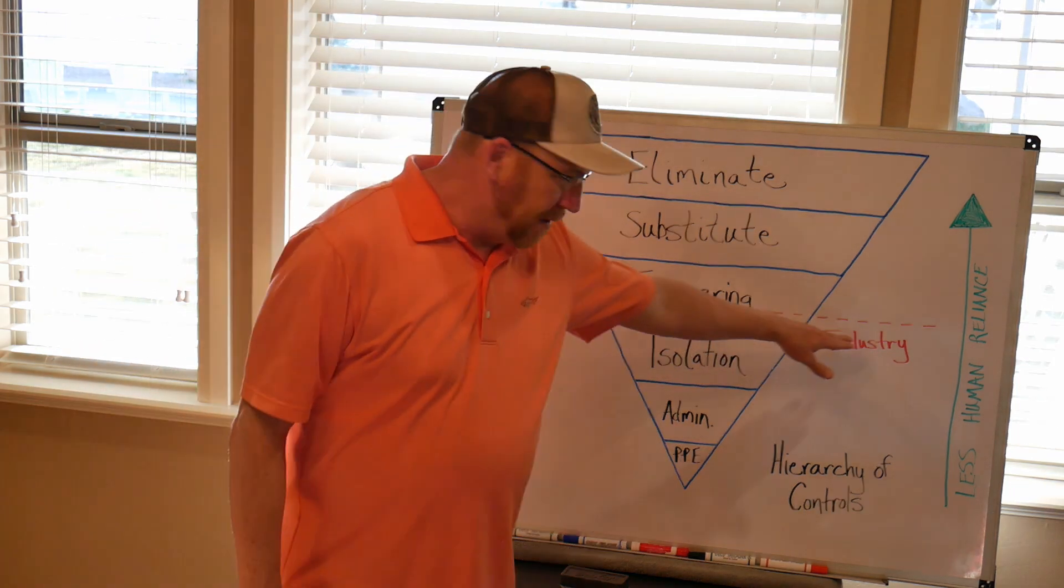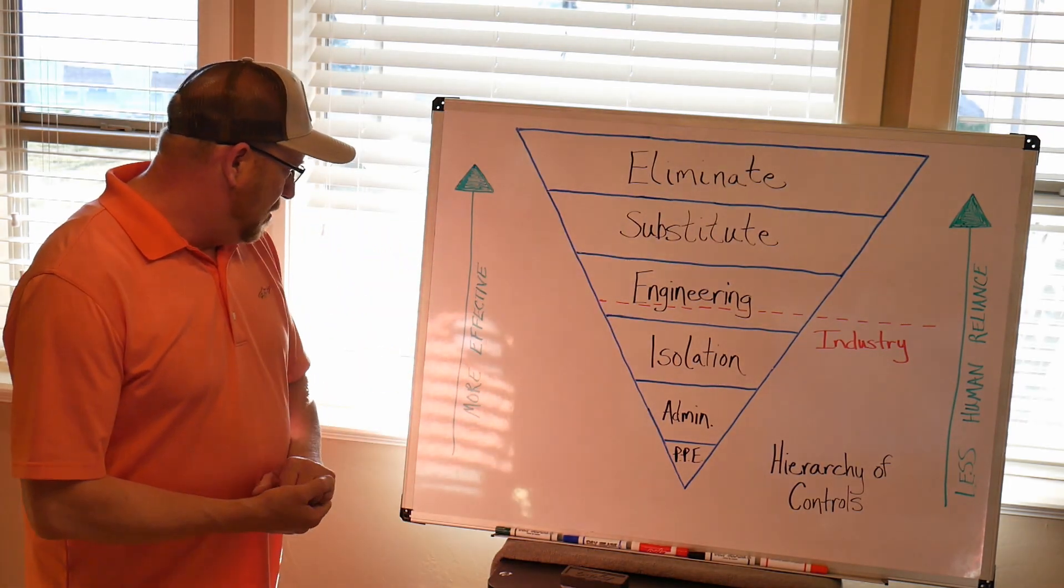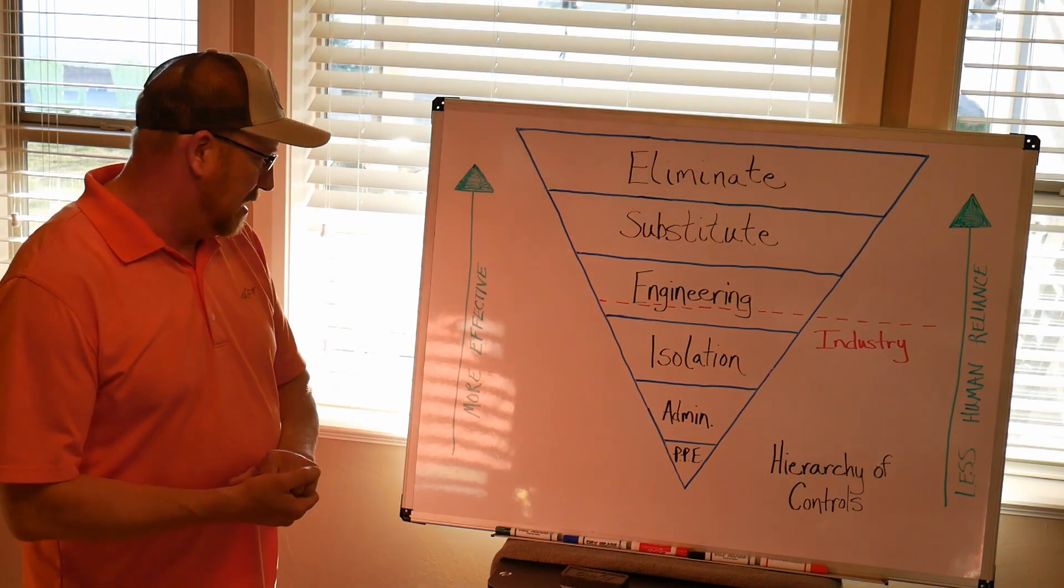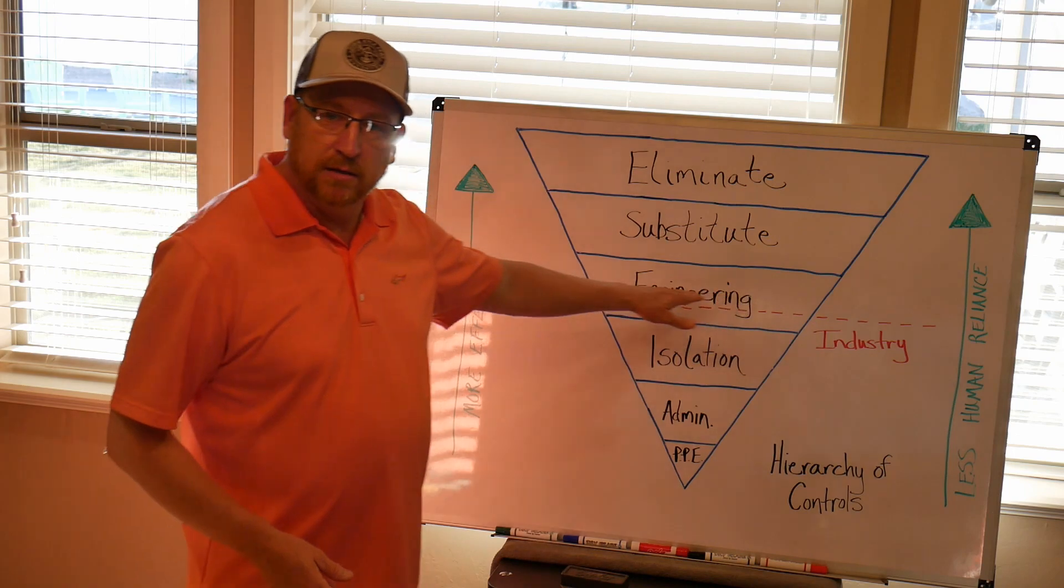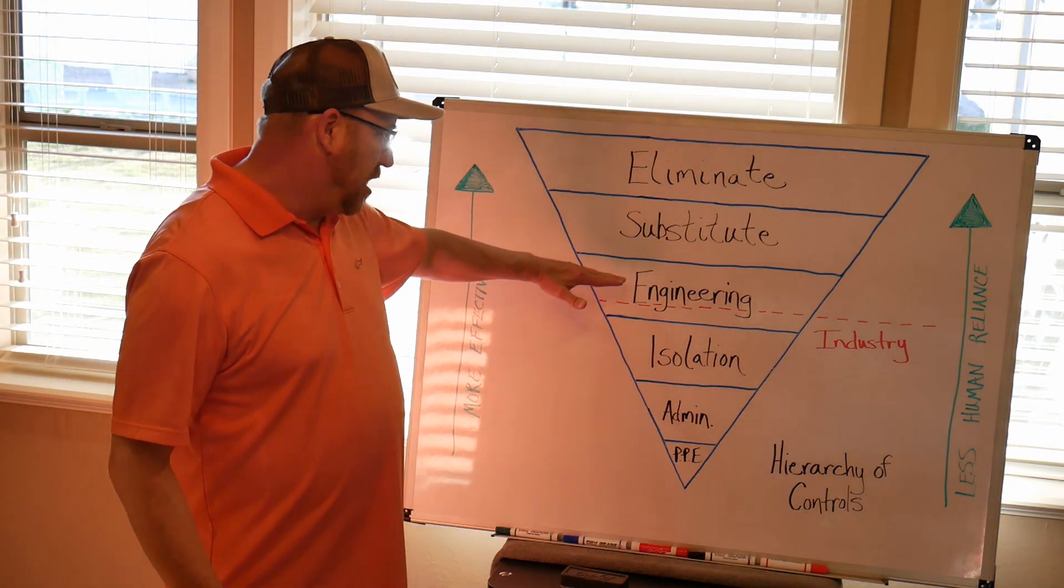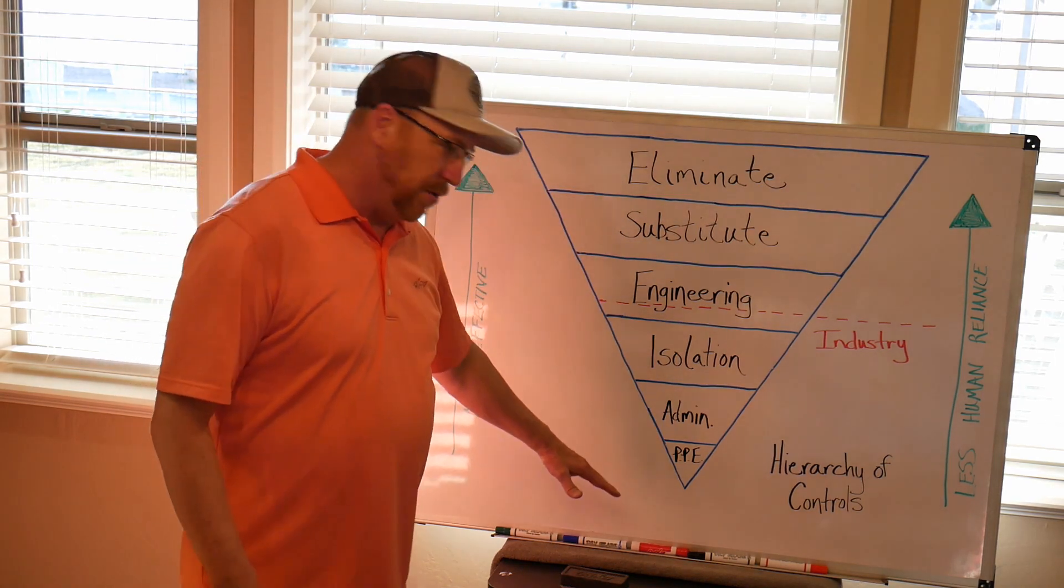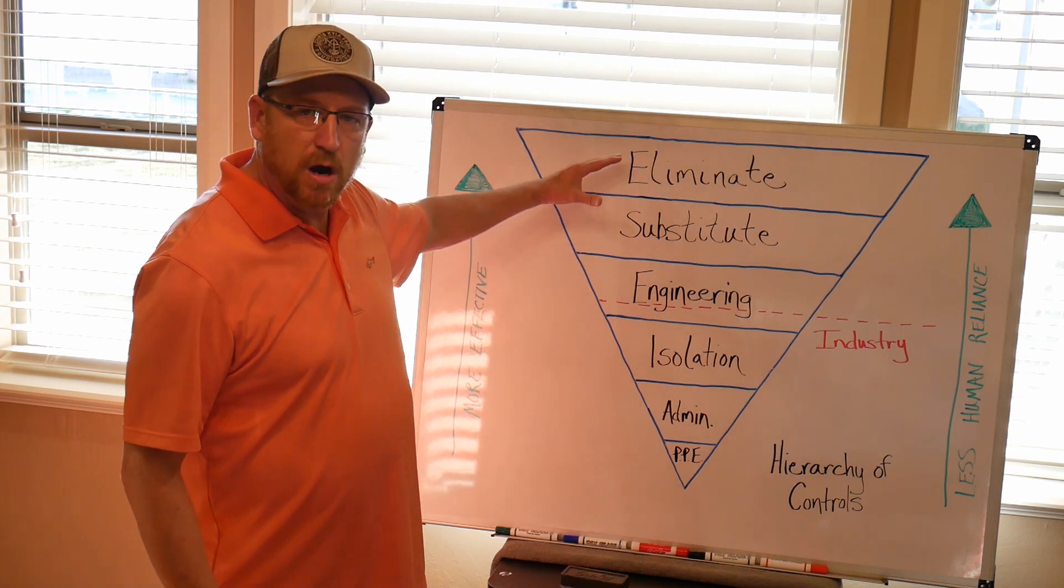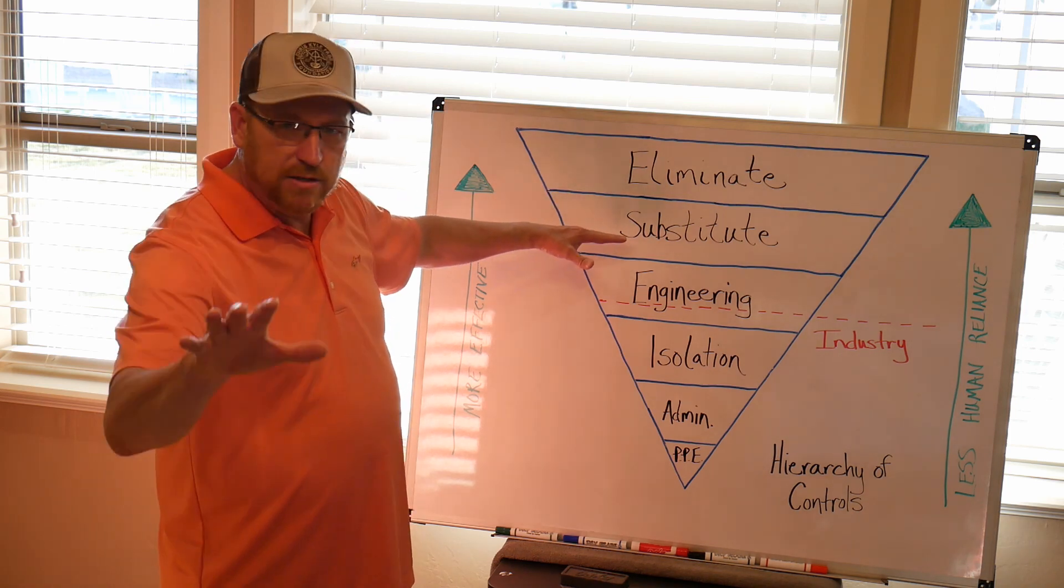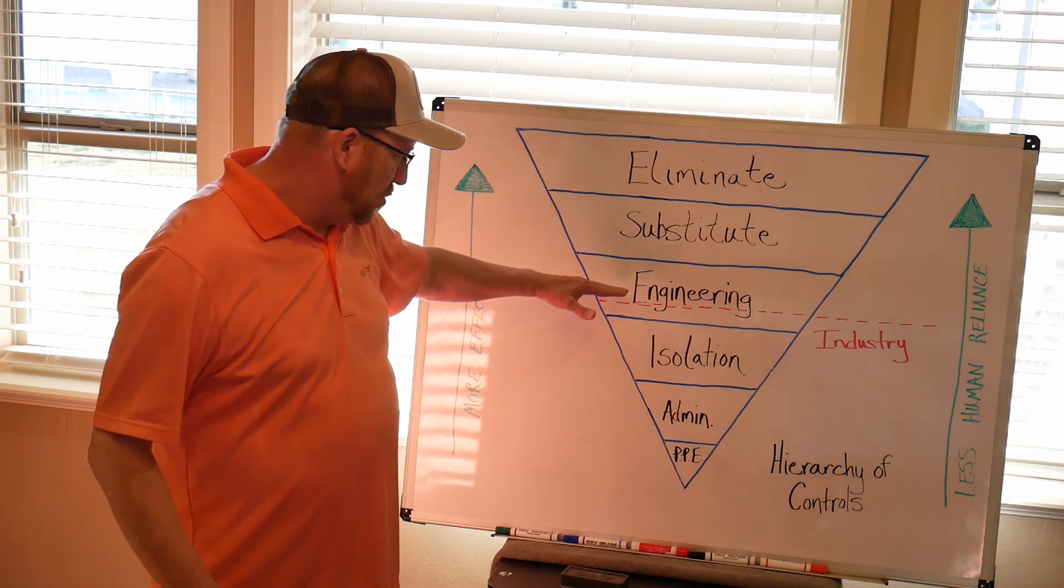You see this dotted line here, and I put industry over there. And actually, I didn't write any of this - my wife did, thank gosh, because I have my own font and there's no way you would be able to read it. But I think this is where we are as an industry. The coal industry, I believe we're right here. There's a lot of companies out there that need to do a lot of substitute and eliminate, but a lot of times we're just engineering and we're down in here. Because sometimes this is hard, like I talked about, and it's pretty costly too. So it's an expense thing, but that's not an excuse.